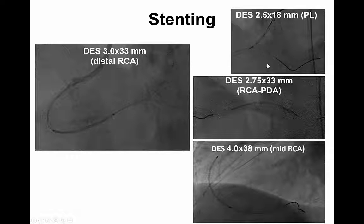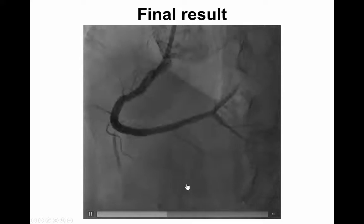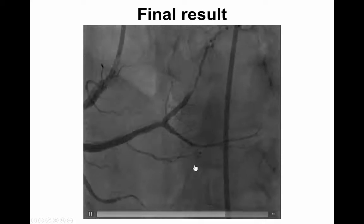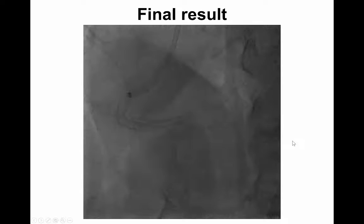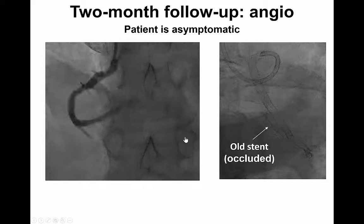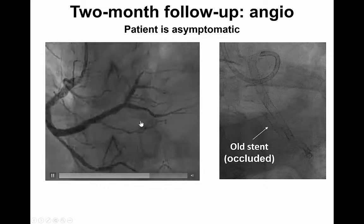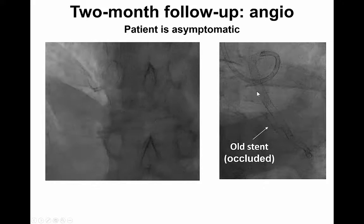We performed T and protrusion stenting across the crux and finally implanted another stent in the proximal to mid RCA. This is the final result, which is excellent. Since we were concerned about the durability of this procedure, we had the patient come back a couple of months later, and the patient was asymptomatic.